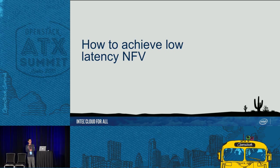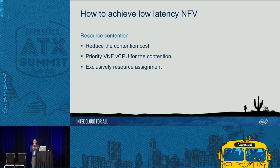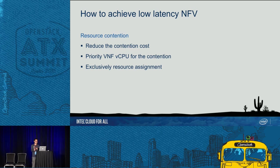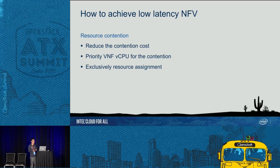How can we achieve low-latency NFV? For resource contention, we can do several things: reduce the contention cost (e.g., reduce the time to switch from another application to the VNF vCPU), raise the vCPU thread priority so it gets served faster, or in extreme situations, exclusively assign resources to the vCPU. As discussed in the previous session, CPU pinning and SR-IOV serve this purpose — to assign resources exclusively to the virtual CPU.